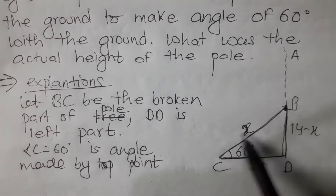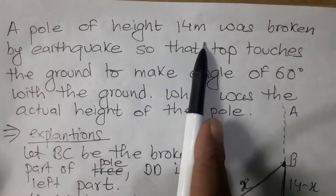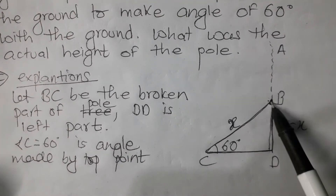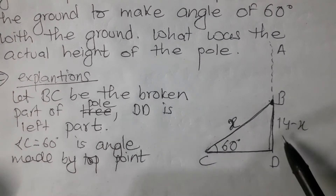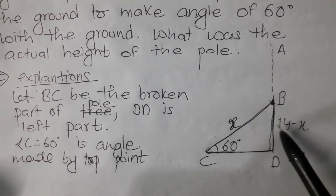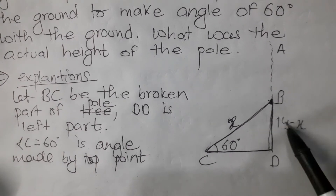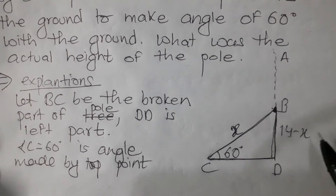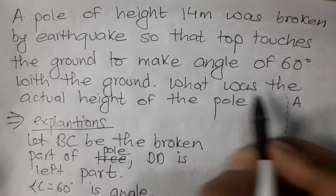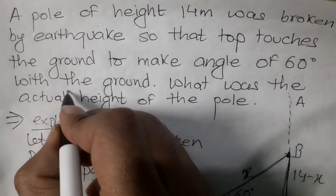This is a pole of original height 14 meters. The x part is the broken portion. The remaining part plus x equals the total height of 14. So what was the height of the broken part? What was the actual height of the pole?